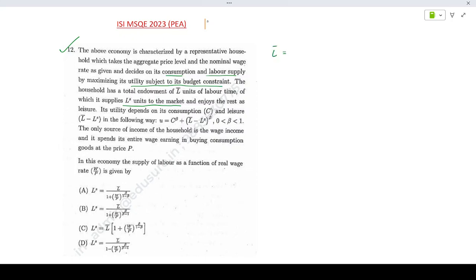Total time L bar. This is your total time. LS is given for labor and L bar minus LS is given for leisure. If you take a note at the last line, here we have an important hint.